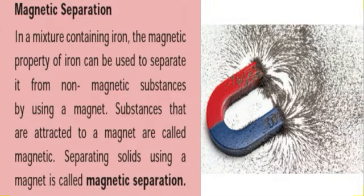Magnetic separation: In a mixture containing iron, the magnetic property of iron can be used to separate it from non-magnetic substances using a magnet. Substances that are attracted to a magnet are called magnetic substances. Separating solids using a magnet is called magnetic separation.